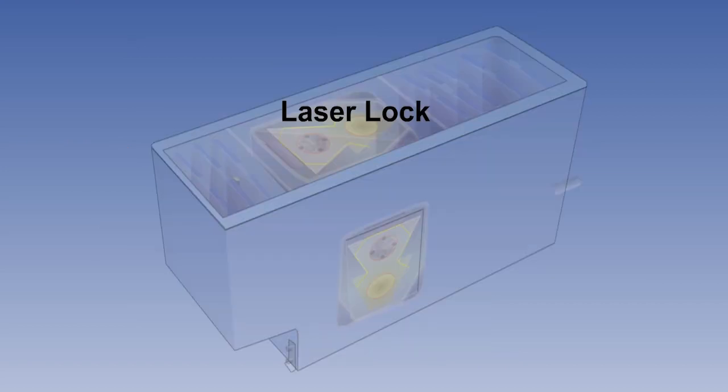One problem associated with the ring laser gyro is called laser lock. The two laser beams can synchronize, and if this happens, they give zero output even when the aircraft is altering its attitude.